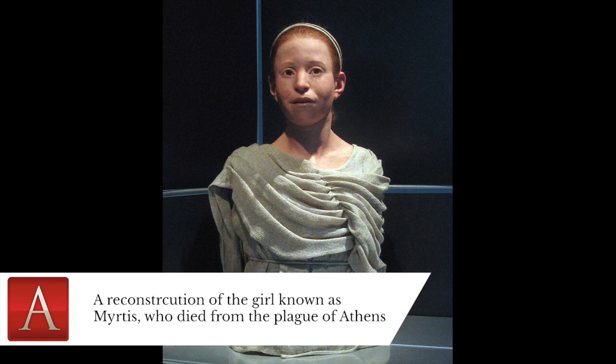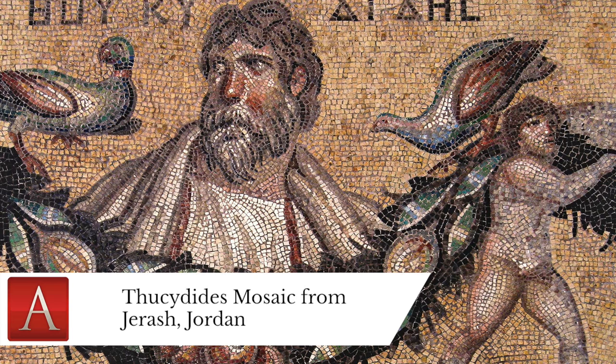Even those healthy when they contracted the plague often succumbed within the first 10 days of getting the first symptom. The fever persisted so fiercely that people couldn't tolerate clothing and were in constant need of water they couldn't hold down. Thucydides described a complete breakdown of law and abandonment of religious practices. Those who survived the disease became immune and helped those still afflicted. The plague killed many people in power, including Pericles, which greatly affected the outcome of the war. Athens was significantly weakened, and with so many people dead, they eventually lost the war to Sparta.